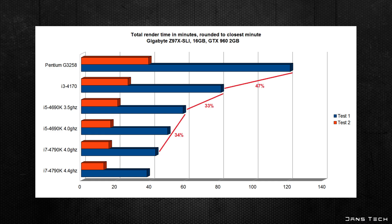Moving all this data into percentage improvements: on average, moving from a Pentium to an i3 gives 47% more performance; moving from an i3 to an i5 gives an increase of 33%; and moving from an i5 to an i7 gives performance increases of up to 34% on average. As for overclocking, applying even a modest 500 MHz overclock really does assist overall render times — on the i7 this improves performance by 21% on average, while overclocking the i5 by the same amount improves performance by 18% on average.